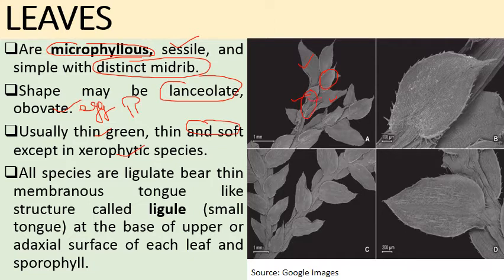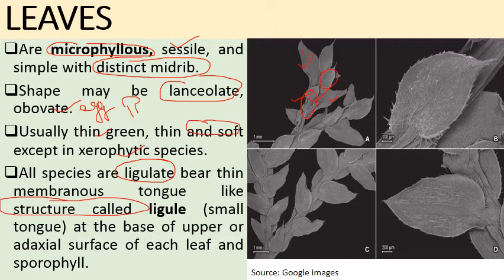All Selaginella species are ligulate — they bear a ligule at the base of each leaf, which is a thin membranous tongue-like structure present on the adaxial surface of each leaf and sporophyll. This is a unique feature of Selaginella.